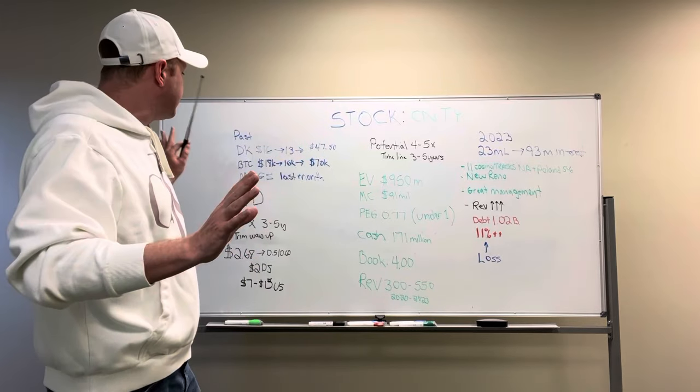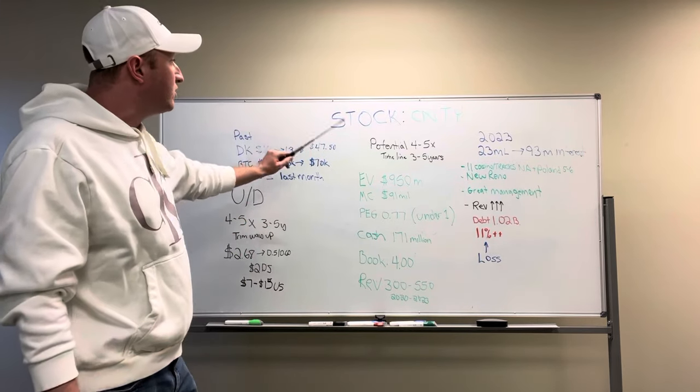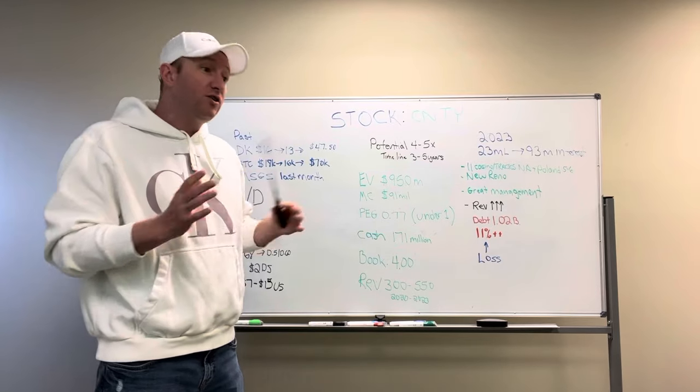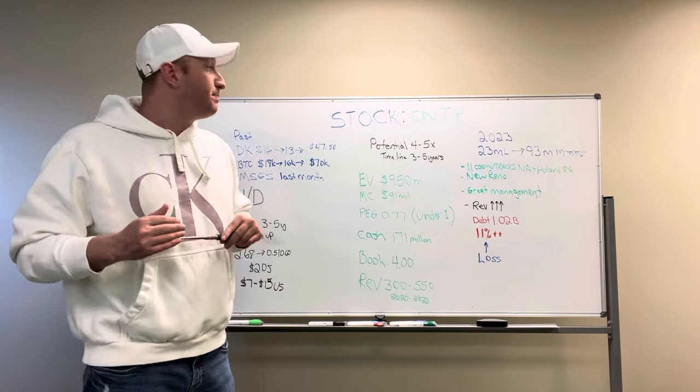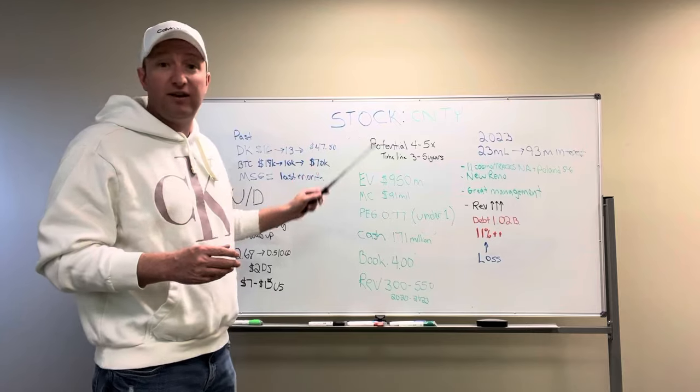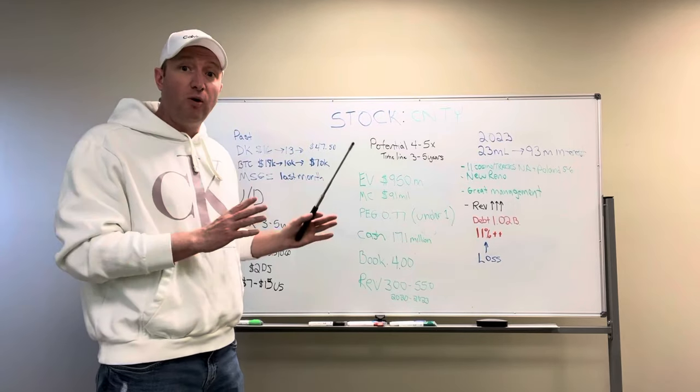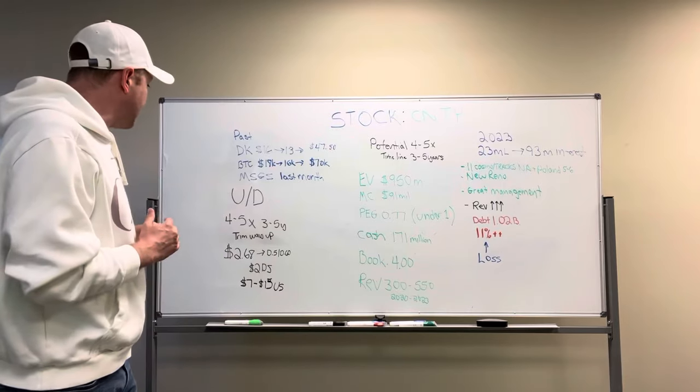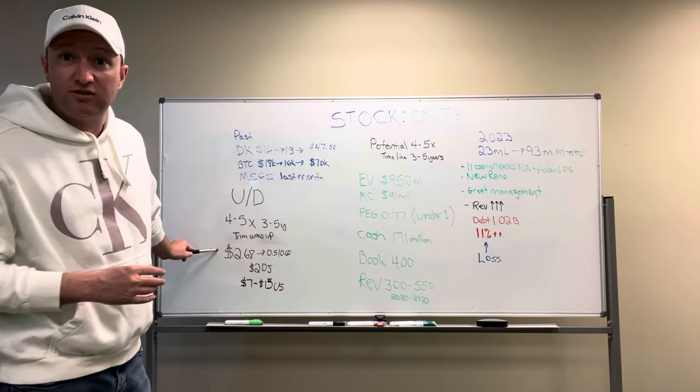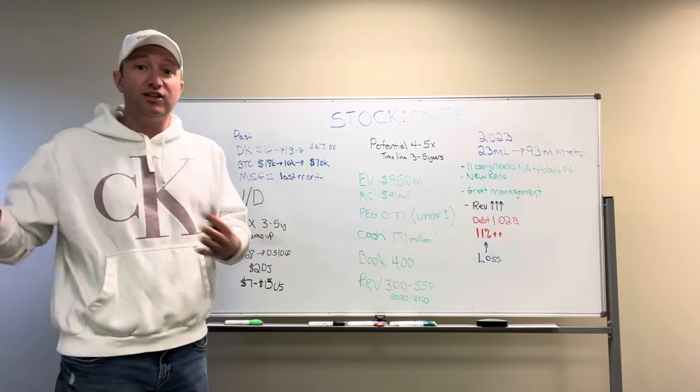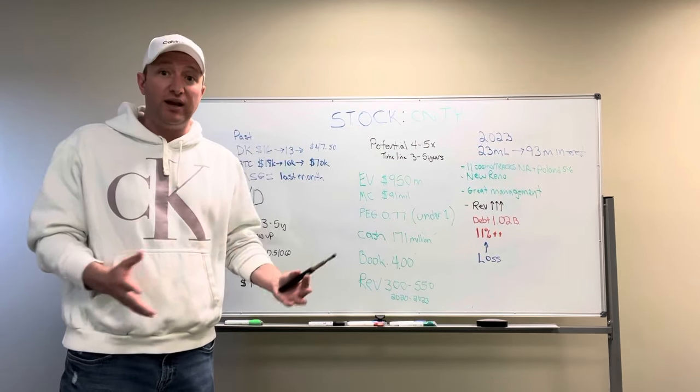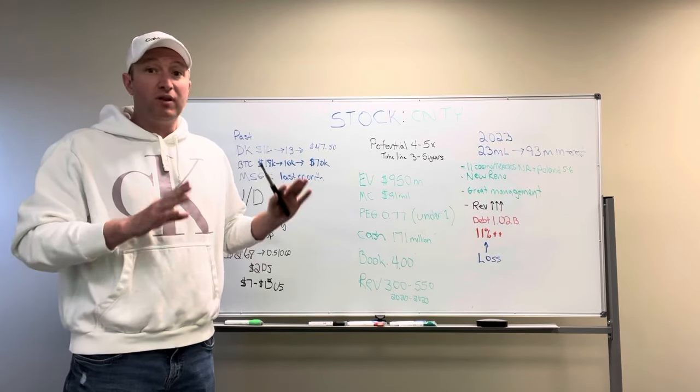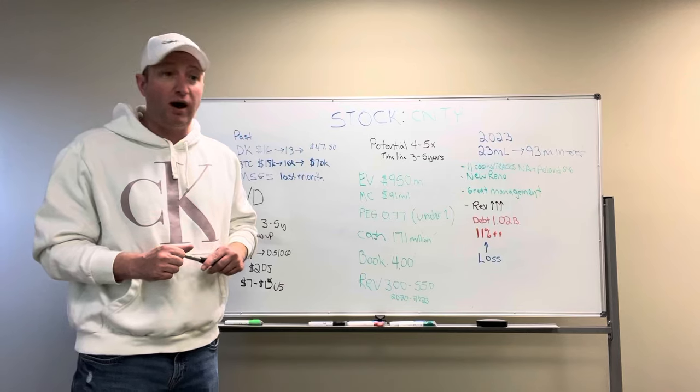Okay, so starting off, timeline, we're looking at potentially a three to five-year investment. Could be a little less, could be a little more. But the upside potential is very significant. Talking about four to five X its current valuation. Now when I drew this up, the stock was sitting at $2.68. It had a nice little rally today. I think it's sitting at like $2.85 now. Absolutely 100%, this is a buy right up to the point of $4. And I'm going to tell you guys why.